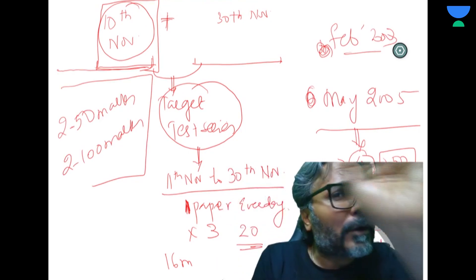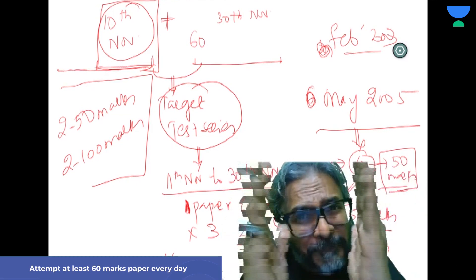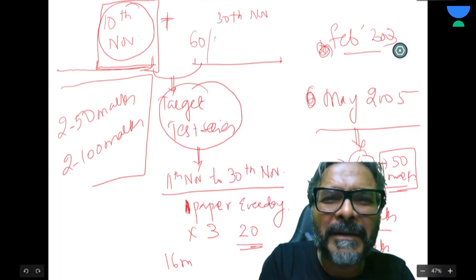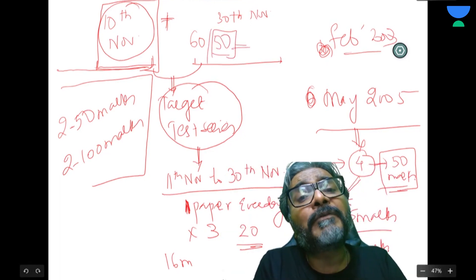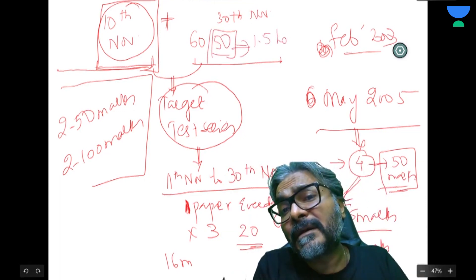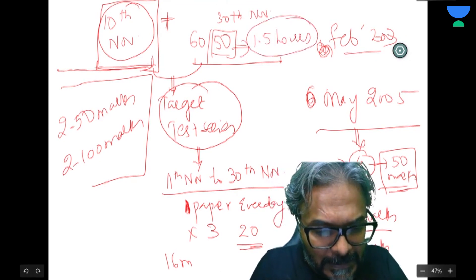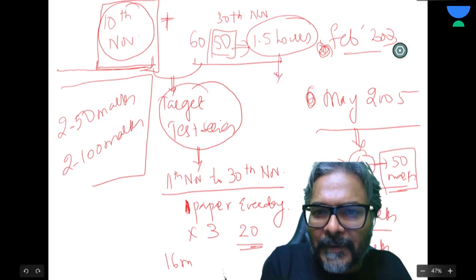If, for God's sake, let's take the worst case: if I cannot write 100 marks paper, at least try 60 marks, at least 60 marks, or at least try 50 marks. So 50 marks, what is the time that you should take for completing it? One and a half hours. By one and a half hours you should complete it.